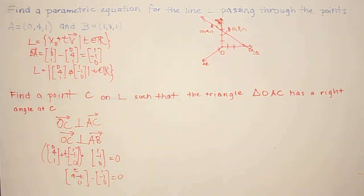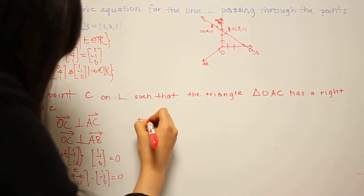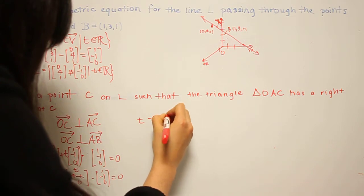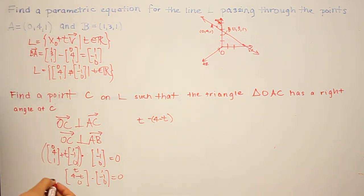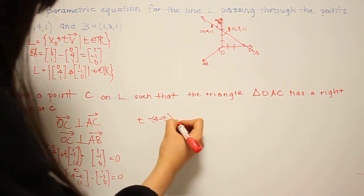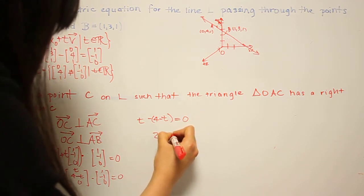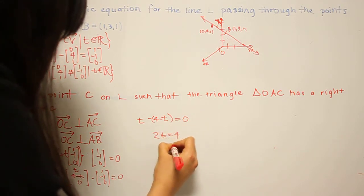And then taking the dot product, we have t minus (4 - t) plus 0 equals 0. So this gives us 2t equals 4, so t equals 2.